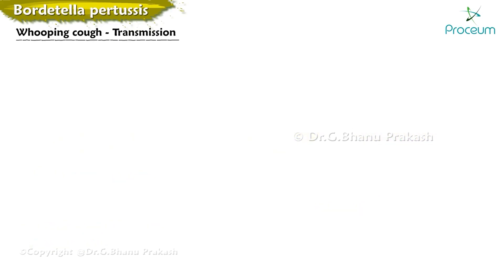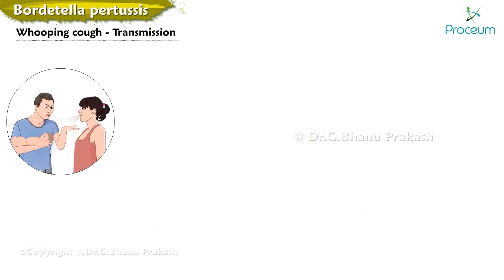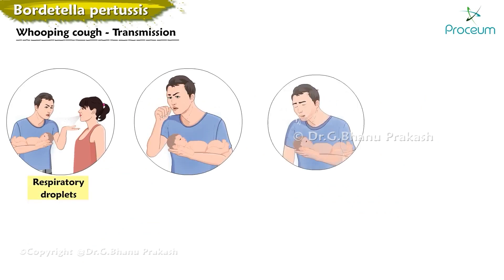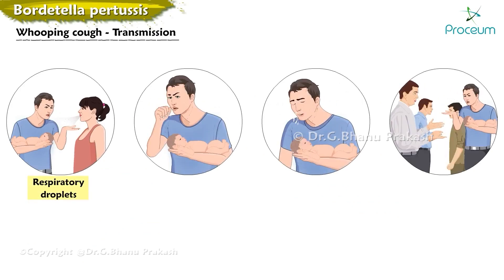Pertussis is spread by respiratory droplets and can be transmitted by coughing, sneezing, or sharing breathing space for extended periods of time. The risk of transmission is greatest during the catarrhal stage.